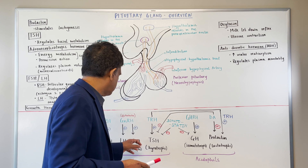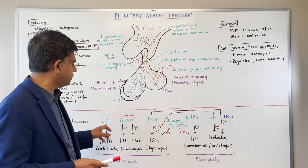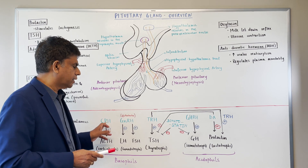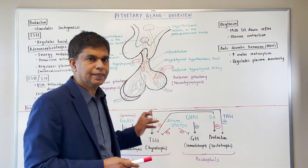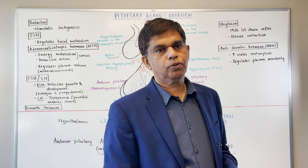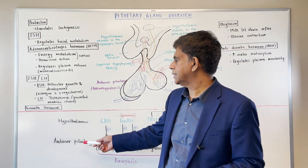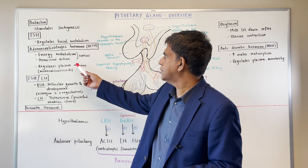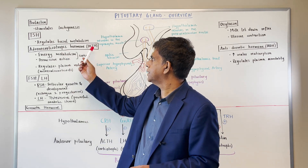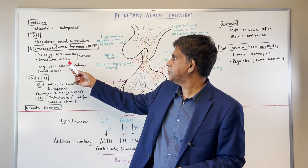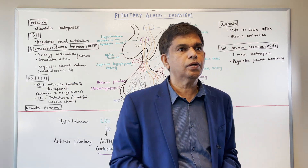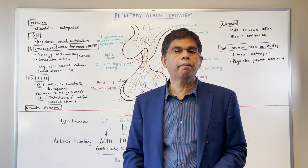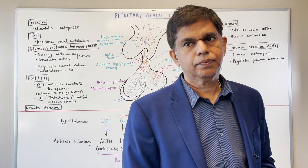The last hormone we're going to talk about is ACTH. You have corticotropin releasing hormone from the hypothalamus producing ACTH. ACTH affects energy metabolism through cortisol and regulates plasma volume through mineralocorticoid activity.